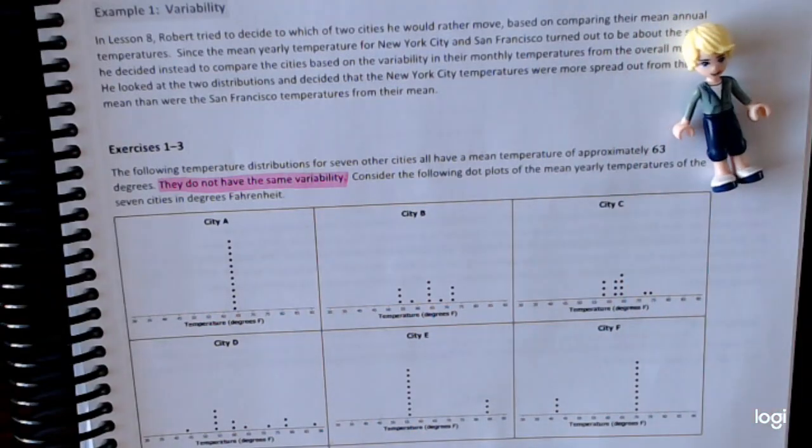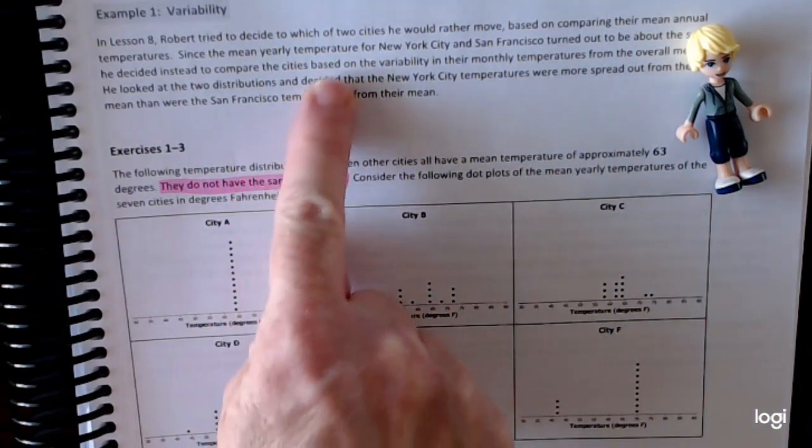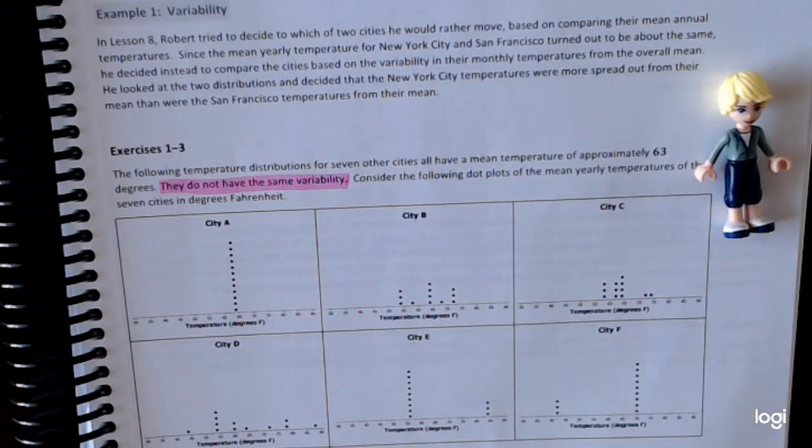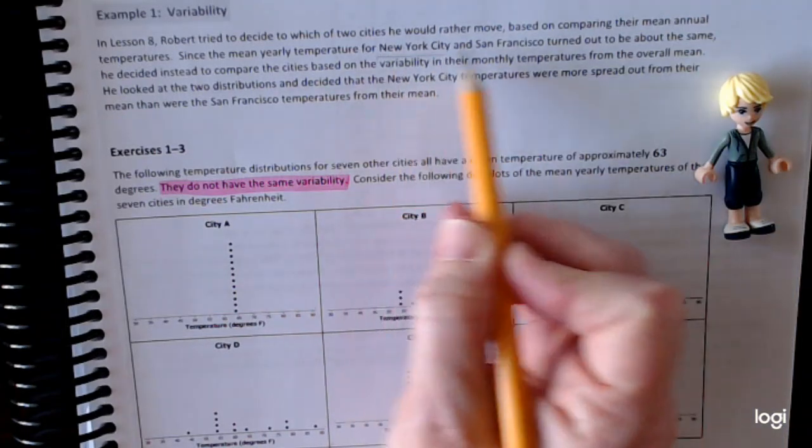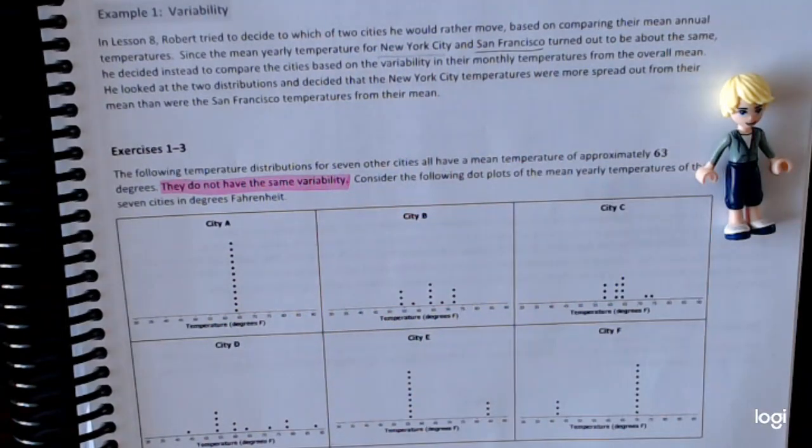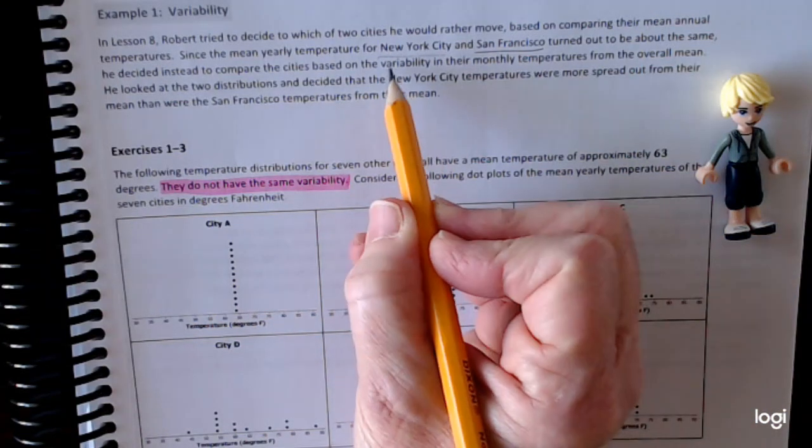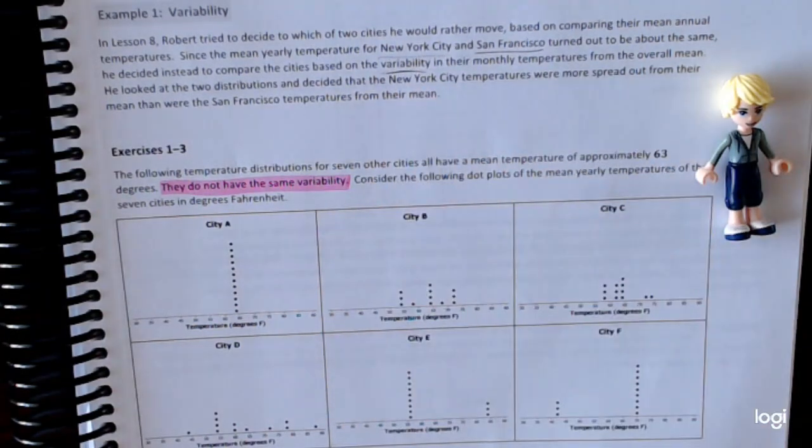It reminded us that in Lesson 8, Robert tried to decide to which of two cities he would rather move, based on comparing their mean annual temperatures. Since the mean yearly temperature for New York City and San Francisco turned out to be about the same, he decided instead to compare the cities based on the variability in their monthly temperatures from the overall mean. He looked at the two distributions and decided that the New York City temperatures were more spread out from their mean than were the San Francisco temperatures from their mean.